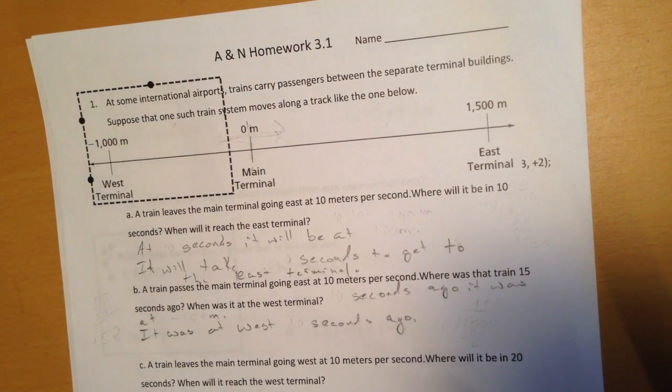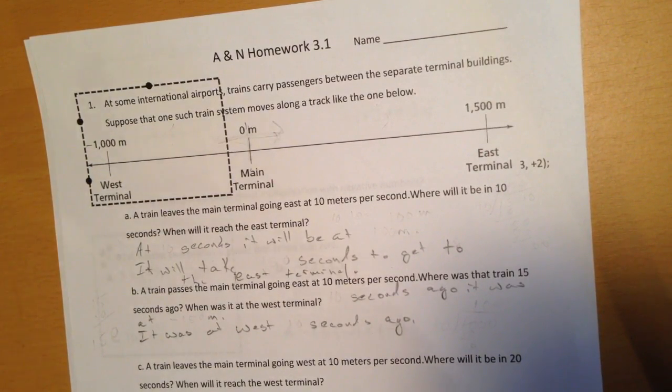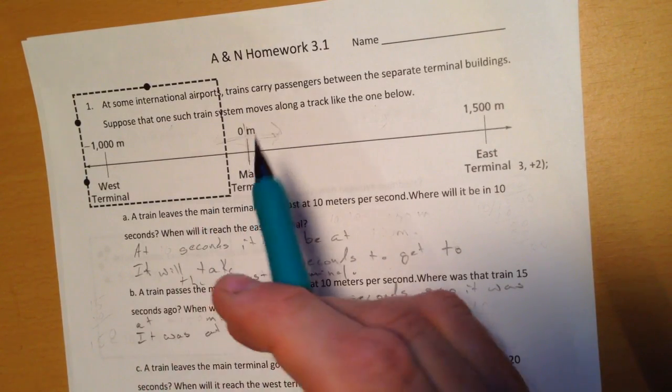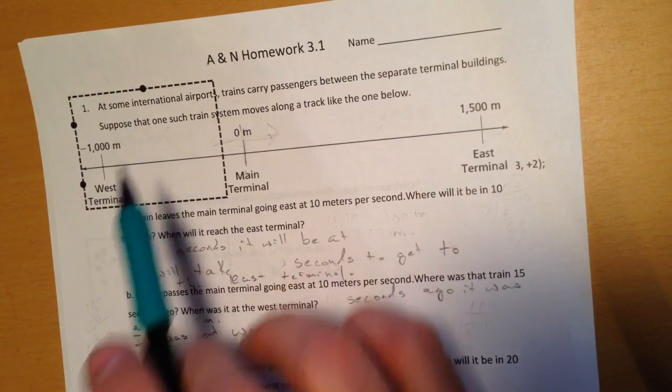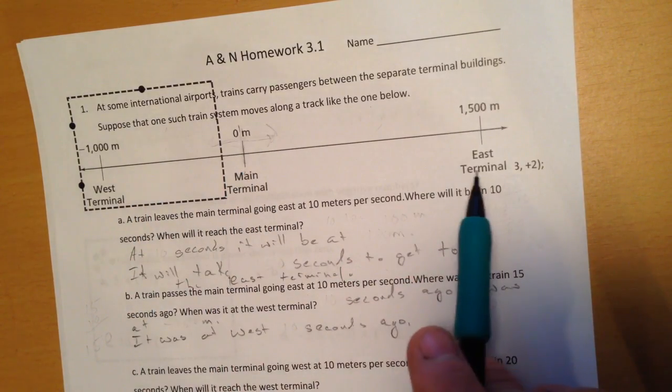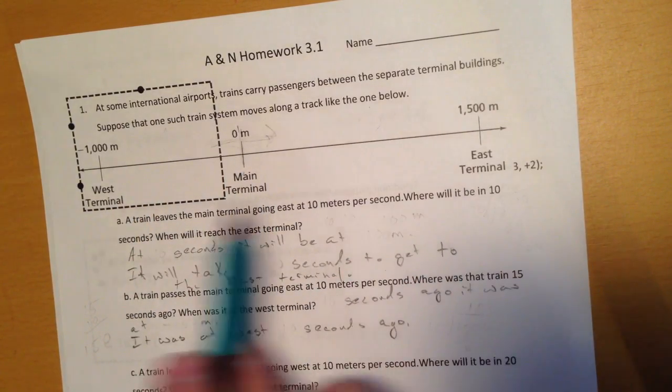Here on homework 3-1, we have a situation that's very similar to what we were talking about, people running on a football field. At an international airport, trains carry people from the main terminal to the buildings.